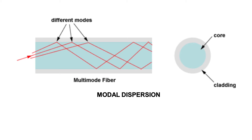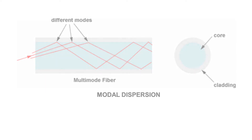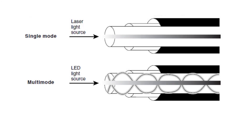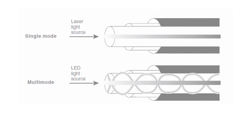Modal dispersion limits the bandwidth and distances that can be accomplished using multi-mode fibers. For this reason, multi-mode fiber is generally used for connectivity within a building or a relatively geographically contained environment. Single-mode fiber allows only one mode of light to propagate through the fiber. Because only a single mode of light is used, modal dispersion is not present with single-mode fiber. Therefore, single-mode fiber is capable of delivering considerably higher performance connectivity over much larger distances, which is why it generally is used for connectivity between buildings and within environments that are more geographically dispersed.